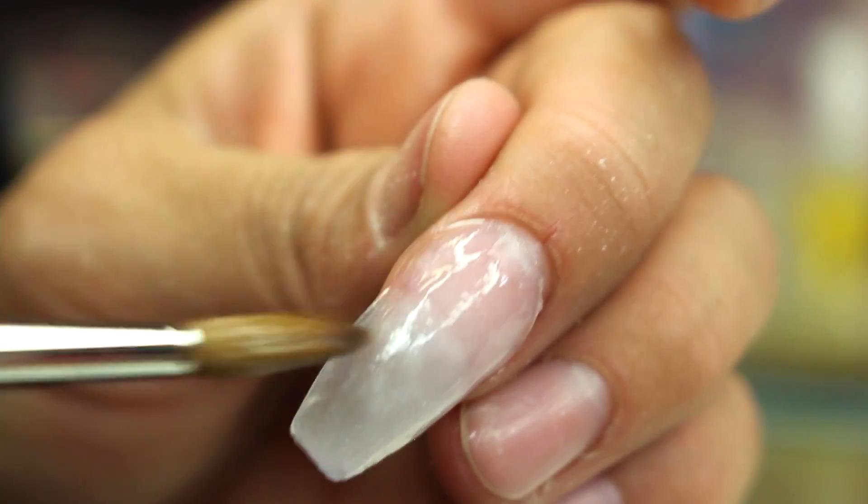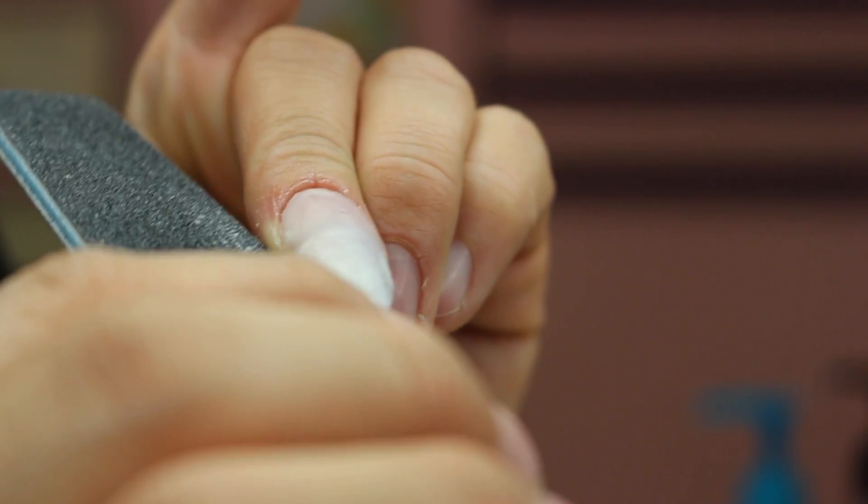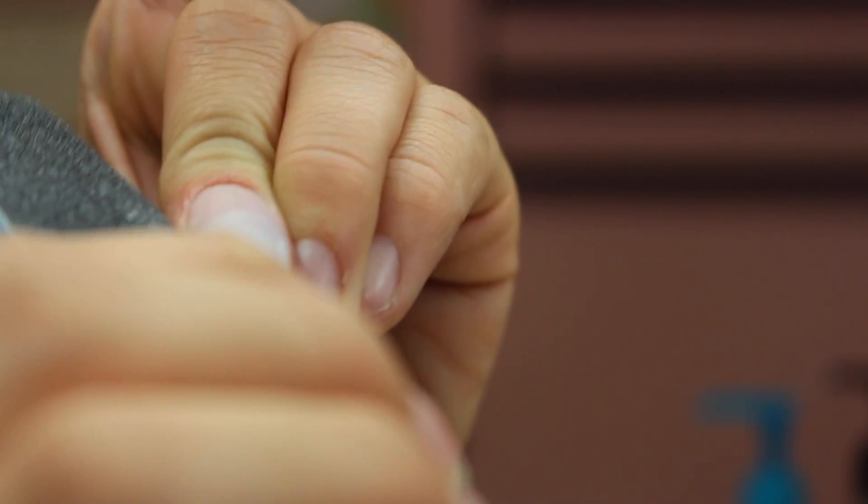Alright, once you have it nice and filled in how you want it - I'm sorry, it's going to look very crappy because this is the best I could do while trying to film. I'm going to go ahead and file it up. Once it's nice and dry and you turn your brush on and you bang it against the nail, you should hear a click and that tells you that it's good and dry.